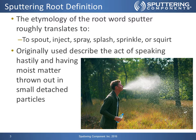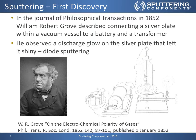When people ask me what I do and I tell them that I work for a company called sputtering components, they often give me a confused look. That's because the etymology of the root word 'sputtering' roughly translates to spout, inject, spray, splash, sprinkle, or squirt, and it's originally used to describe the act of speaking hastily and having moist matter thrown out in small detached particles. As you can see in the picture to the right, the first use of sputtering for the process we use today was first recorded in the Journal of Philosophical Transactions in 1852 by William Robert Grove, as he described connecting silver plates within a vacuum vessel to a battery in a transformer. When he did this, he observed a glow discharge on the silver plate that left it shiny, and this actually turned out to be diode sputtering.